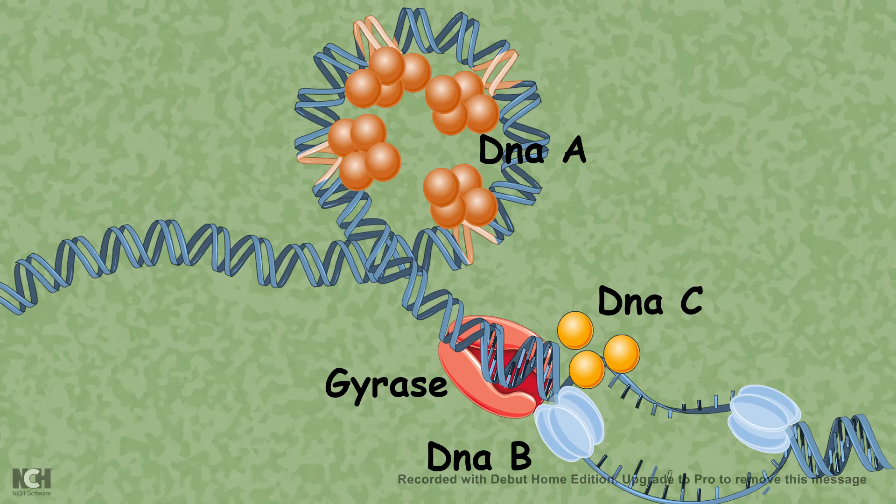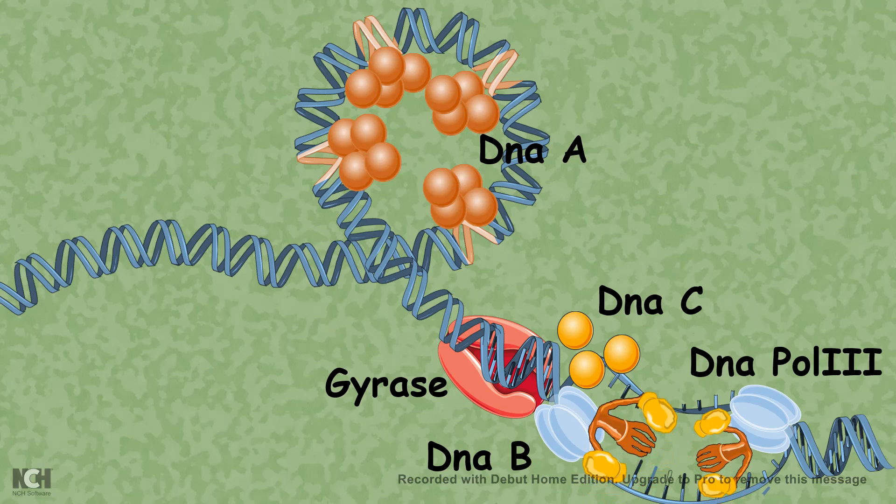The supercoiling problem is taken care of by gyrase. And specific polymerases such as DNA polymerase get recruited with the helicases and they start polymerizing the replication bubble. Mostly, in prokaryotes, one replication bubble forms and that spreads in both directions to replicate the entire genome of that bacteria.